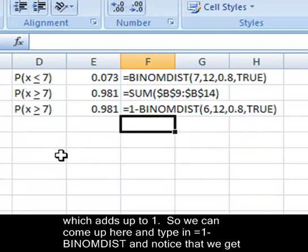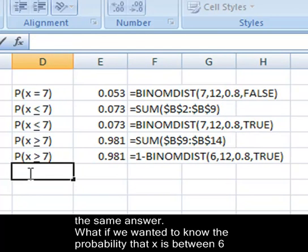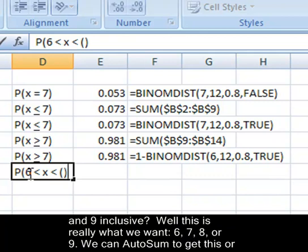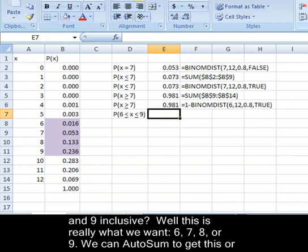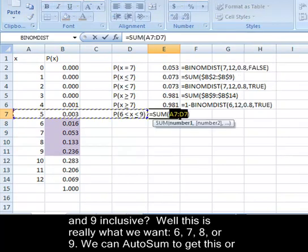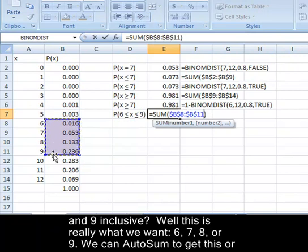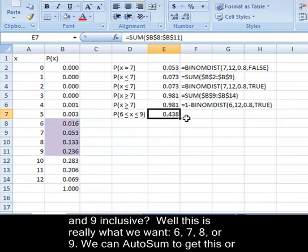So what if we wanted to know the probability that x was between six and nine inclusive? Well, this is really what we want: six, seven, eight, or nine. We can use our auto sum to get this.